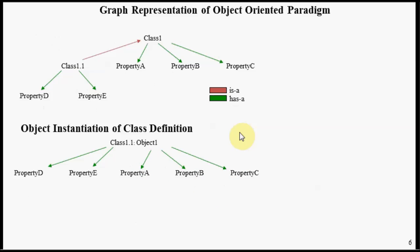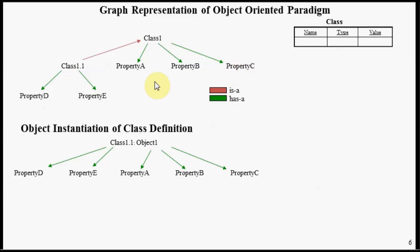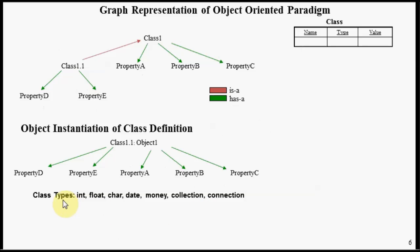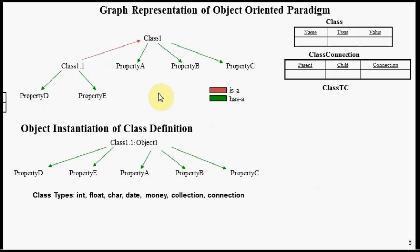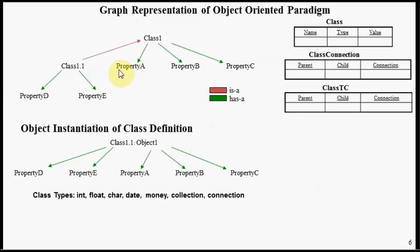Now let's look at the relational tables needed to support this paradigm. We have a class table representing the nodes of our class graph — basically a name-value pair with a type column, where legal type values represent basic class types. We have a class connection table of parent-child nodes with a connection type — either 'has a' or 'is a'. And we have a transitive closure table representing the transitive closure of this class graph, automatically populated and managed whenever nodes or connections are added or deleted.